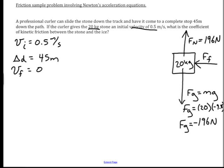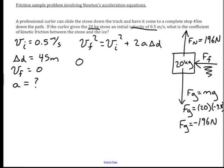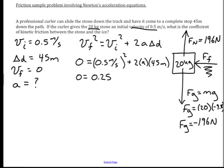I need to solve for the acceleration so I can see how friction causes the slowing of the stone. The equation I'll use is one of the kinematic equations: vf² = vi² + 2a·Δd. The final velocity is 0, so 0 equals 0.5 meters per second squared, plus 2 times the acceleration times 45 meters. Leaving out units for clarity, this simplifies to 0.25 plus 90a, where a is the acceleration.